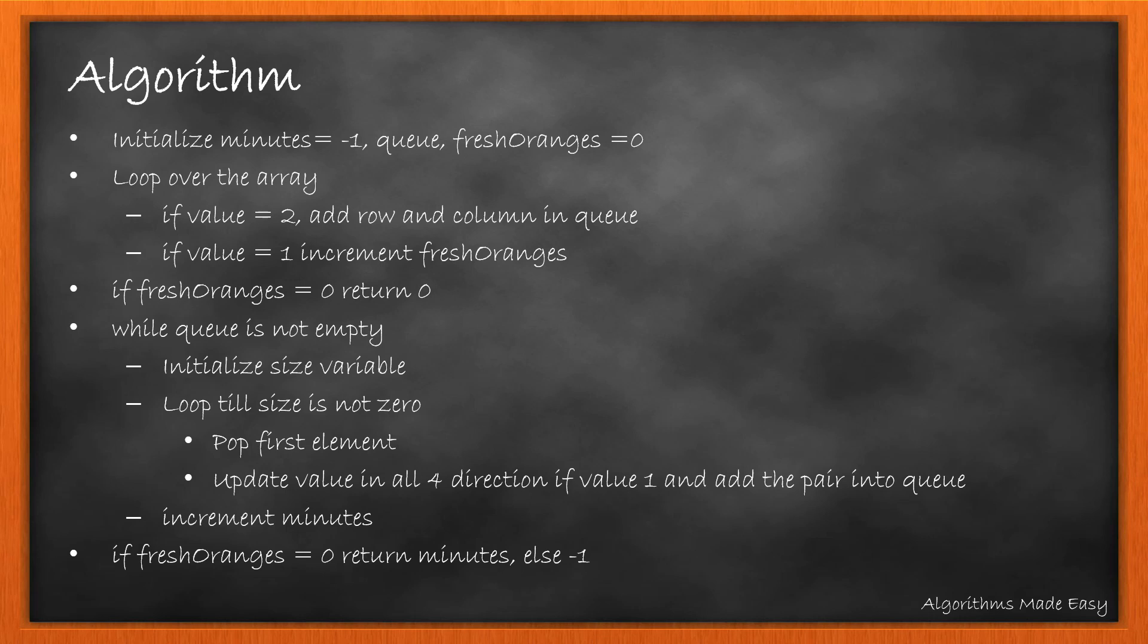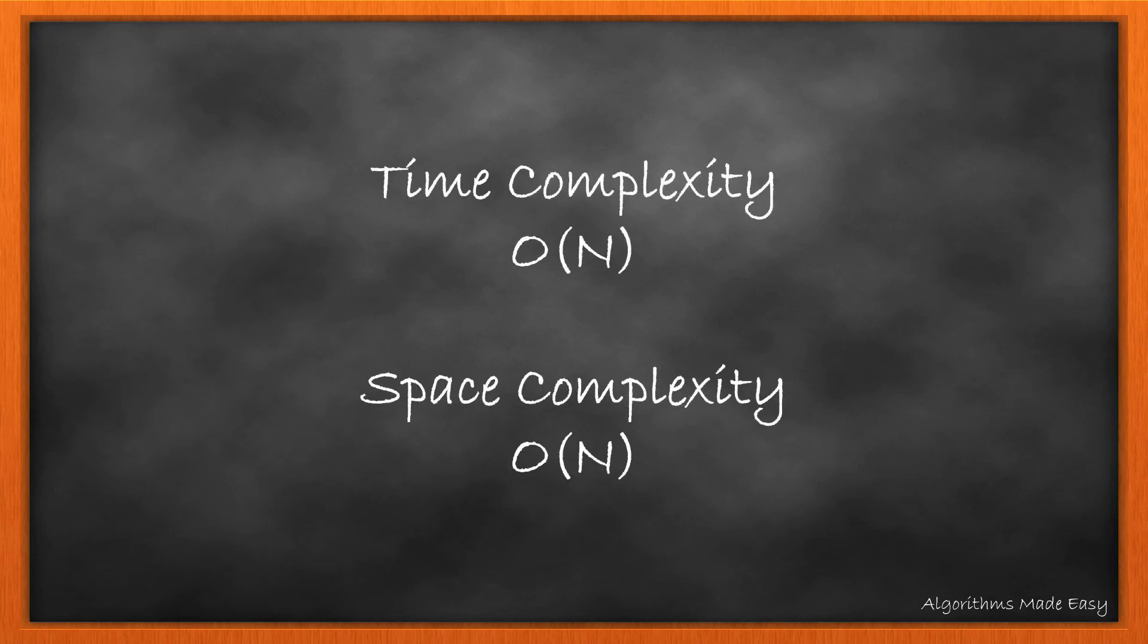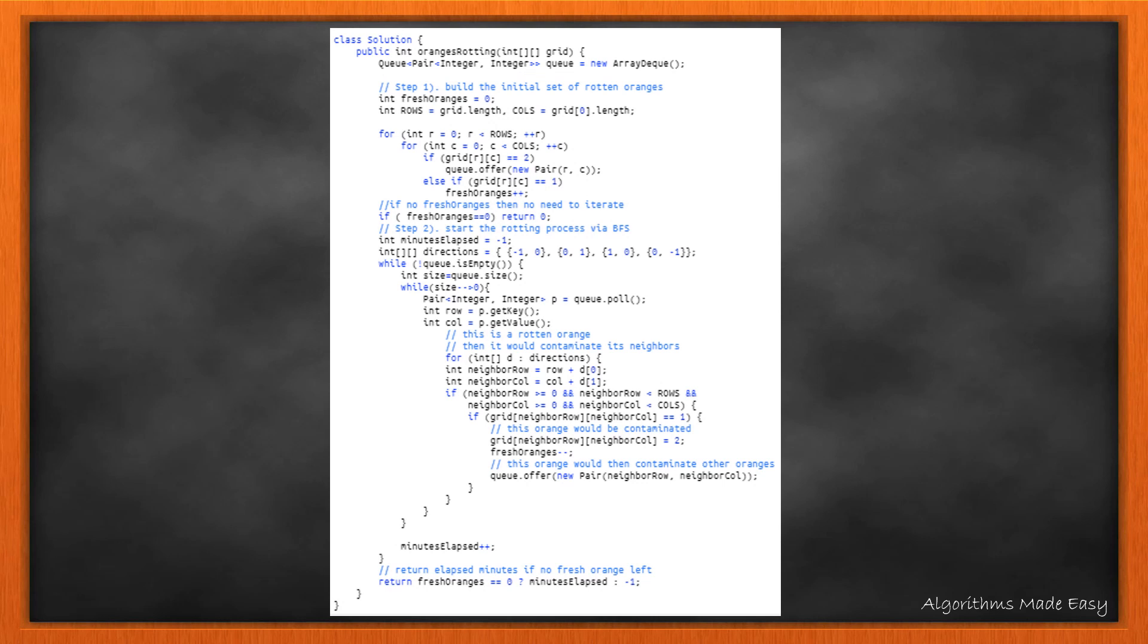If fresh orange is 0, we return minutes, else we return minus 1. The time and space complexity is O(m×n). Here is the actual Java code snippet. You can also find the link to the code in the description below.